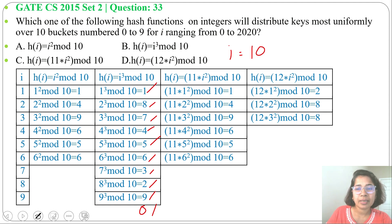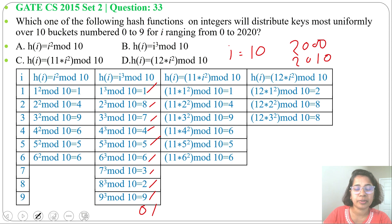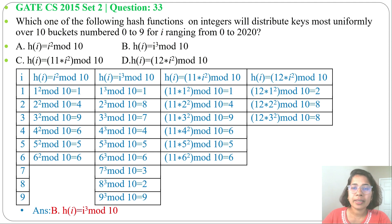You can check any 10 consecutive numbers — whether 1 to 10, 20 to 30, 35 to 45, or even 2000 to 2010 — the hash function will map to every bucket in the hash table. So the answer is Option B: h(i) = i³ mod 10. For i ranging from 0 to 2020, it distributes uniformly over 10 buckets numbered 0 to 9. If this lecture was helpful, please like, share, and subscribe.